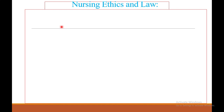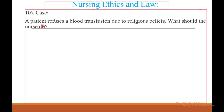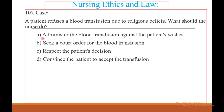Question number ten — nursing ethics and law. A patient refuses blood transfusions due to religious beliefs. What should the nurse do? A — administer the blood transfusion against the patient's wishes. B — seek a court order for the blood transfusion. C — respect the patient's decision. D — convince the patient to accept the transfusion.